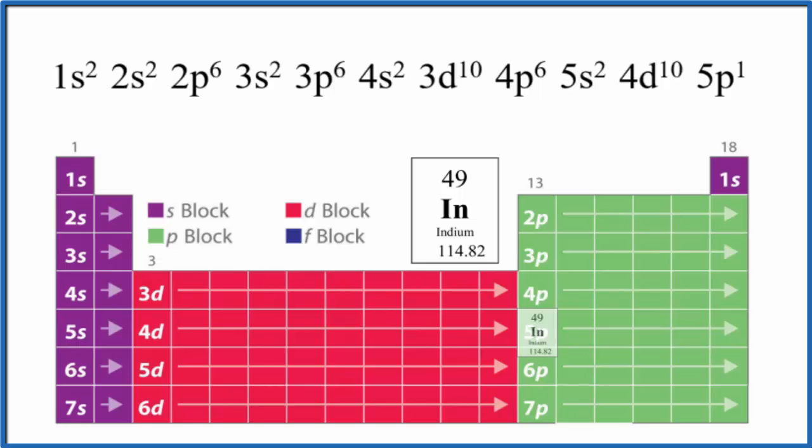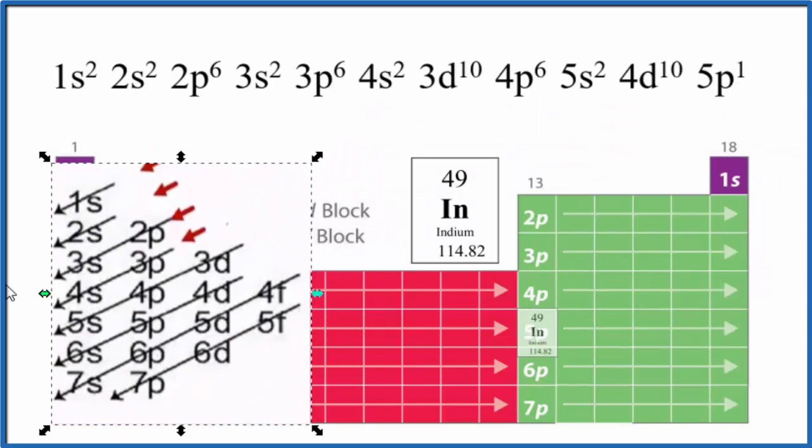There are two ways to do this. We could use the diagonal rule. We use this chart here, follow the arrows, and that would help us figure out the electron configuration. There's a link in the description for how to use the diagonal rule.